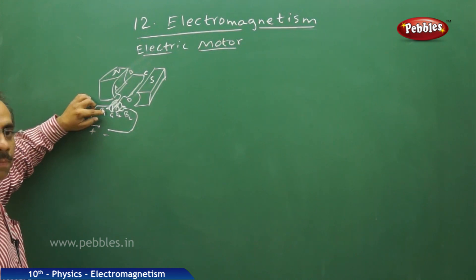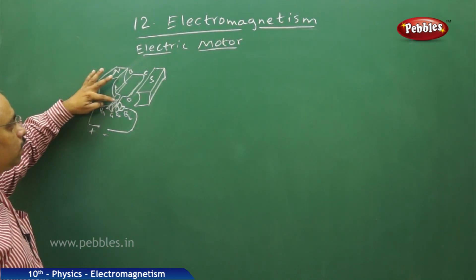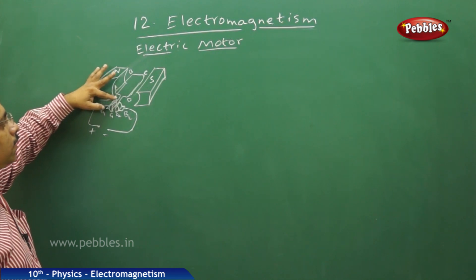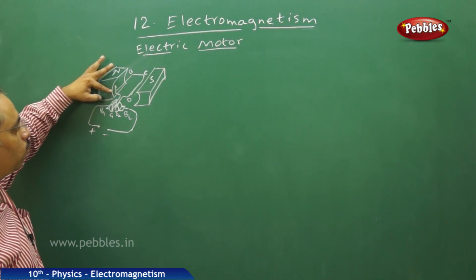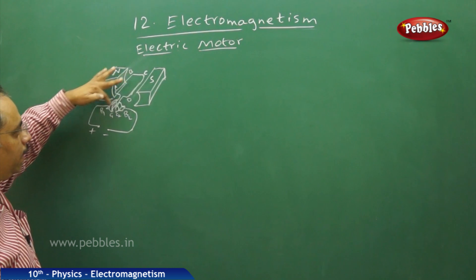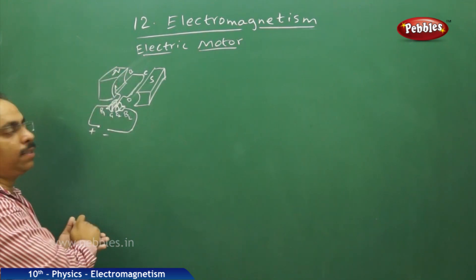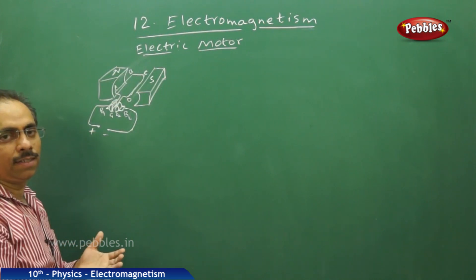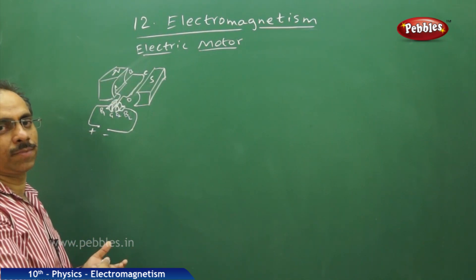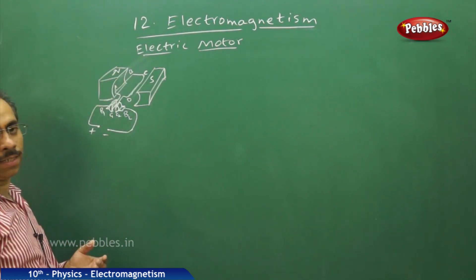From the commutator split ring C1, it will pass through the coil, enter the coil at this end and it will go in the direction A, B and C and D. If you see from the top, the direction of the current is going in the clockwise direction. So a south pole is created over there.